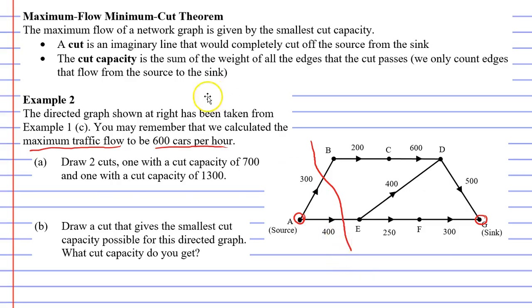Now why does this cut have a capacity of 700? And some of you might have worked it out already. You'll notice that it passes through two edges, one with a weight of 300 and one with a weight of 400. 400 plus 300 gives us a cut capacity of 700. Question A also wants us to make a cut with a cut capacity of 1300. So I'm going to make a cut this time in blue, and I want to pass it through three edges that add up to 1300. 600 plus 400 makes 1000 plus 300 makes 1300. So this cut has a cut capacity of 1300.